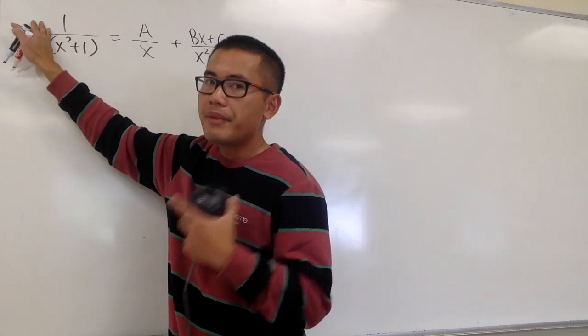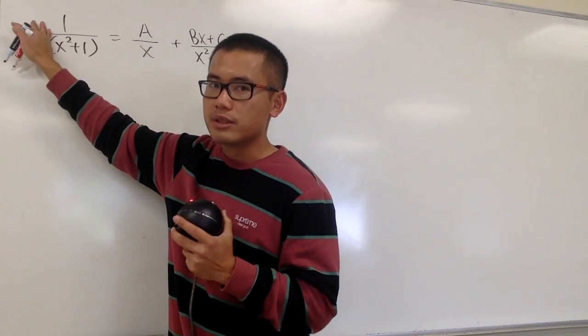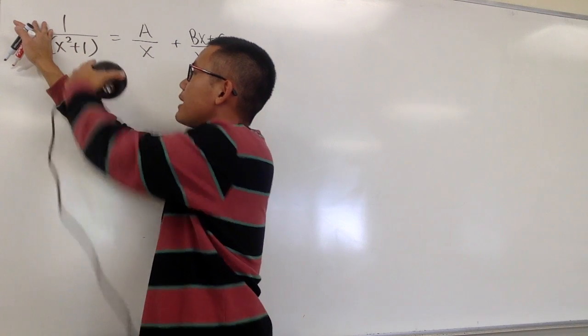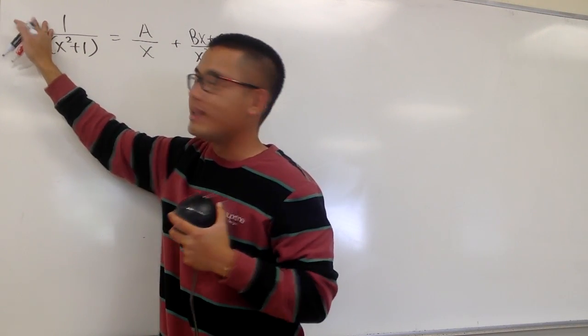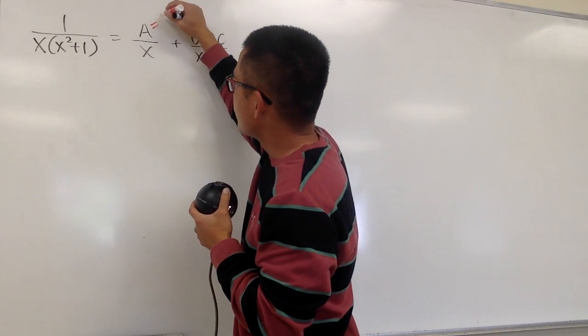So, cover this up, and then think about it, we have to let x equal to 0, and we will have 1 over 0 squared plus 1. 1 over 0 squared plus 1 is just 1 over 1, which is 1. In another word, a is equal to 1.